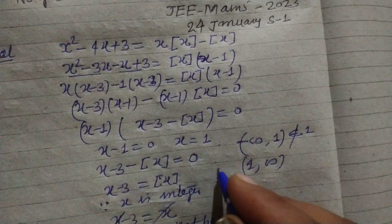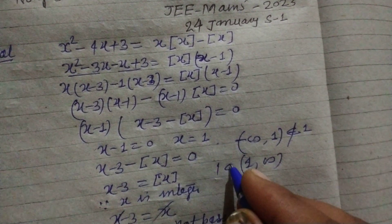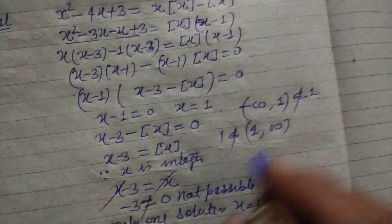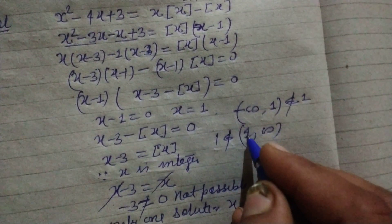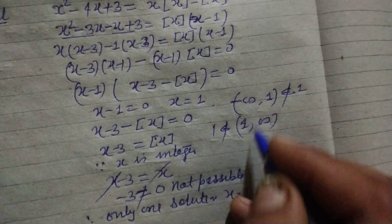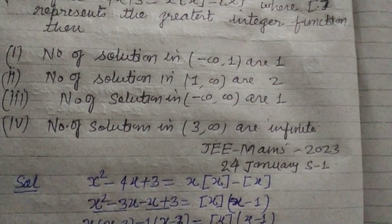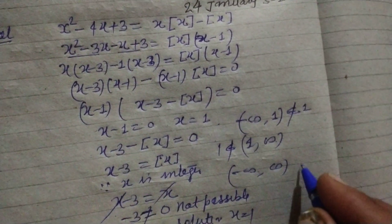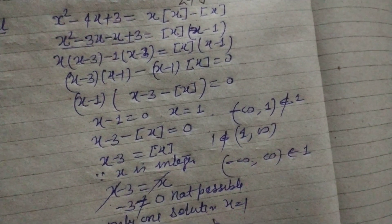(1, ∞), one also doesn't belong to this because this is an open interval. Now the third is (-∞, ∞), so one belongs to this.